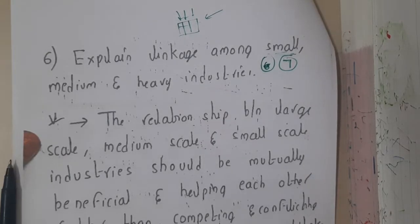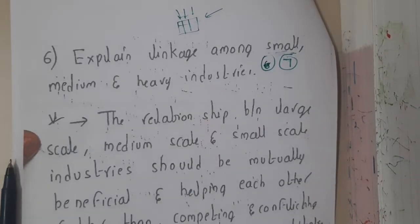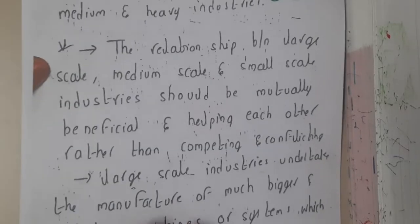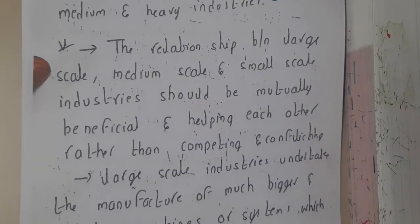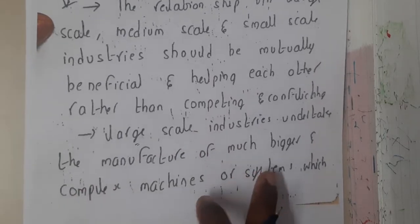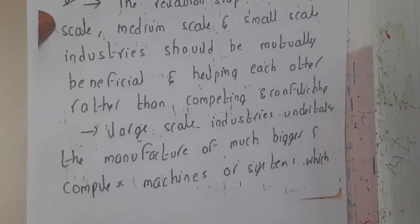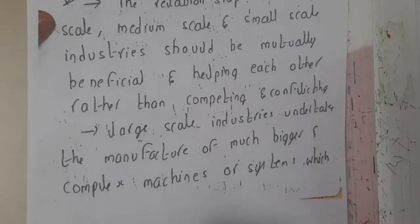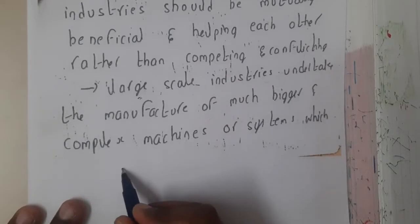They should help each other rather than competing and conflicting. They should not compete saying 'I will be making the best product, you are not good at that' — they should all succeed together. Large scale industries undertake the manufacturing of much bigger and complex machines, while small scale industries take on small products. A best example for small scale industry would be nuts and bolts.